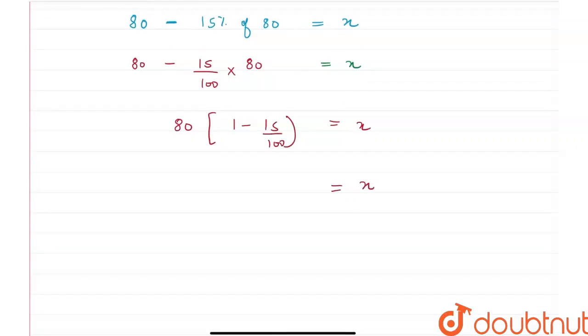80 into 85 divided by 100. Zero and zero will cancel out, this would be 4, this would be 5.